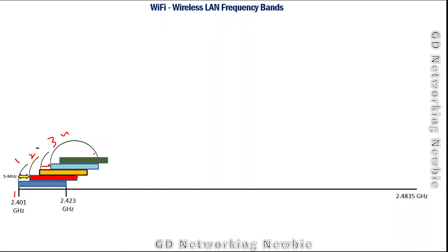The important point is that channels two, three, and five all interfere with channel number one — meaning they overlap into it. If two devices are operating in the same or overlapping frequency channels, they will interfere with each other, making successful communication challenging.